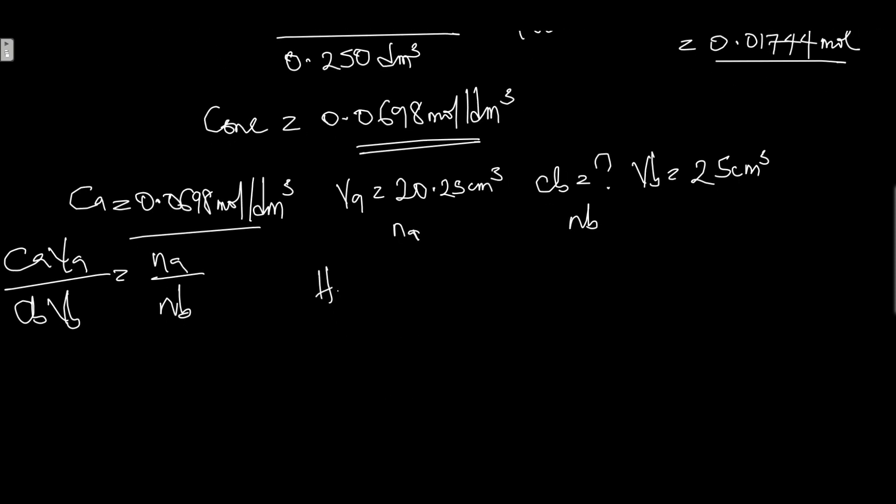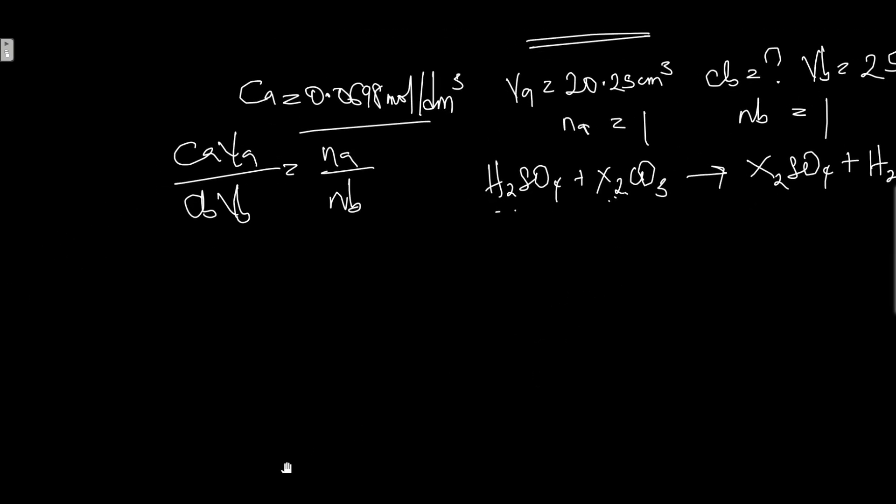NA and NB are gotten from the balanced chemical equation. Take note, the titration is between sulfuric acid and X carbonate to give X sulfate plus water plus carbon dioxide gas. The mole ratio is 1:1, so NA is 1 and NB is 1.